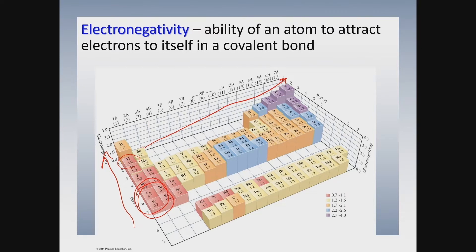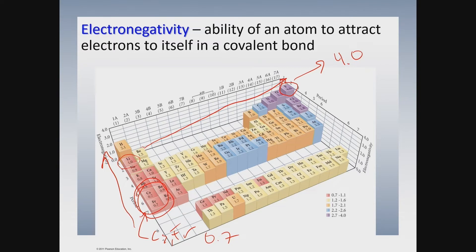So to summarize: as you go up a group, electronegativity tends to increase, and as you go across a period from left to right, electronegativity also tends to increase. There are some values I suggest you memorize. Memorize that cesium and francium — the elements on the lower left end of the periodic table — have the lowest number at 0.7. And memorize that fluorine, on the upper right end, has the highest electronegativity at 4.0 — you can't get any higher than that.